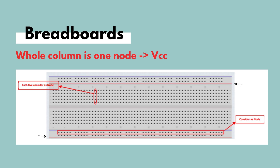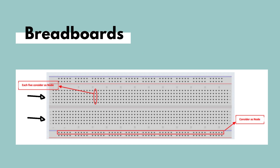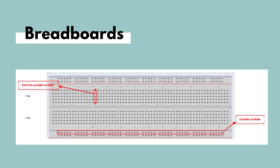However, this is not how the rest of the breadboard is divided. As for the inner part of the breadboard, each column is divided into multiple rows of nodes, and each node has five junctions, which are these five dots that we can see.